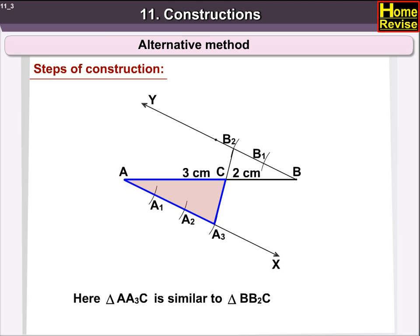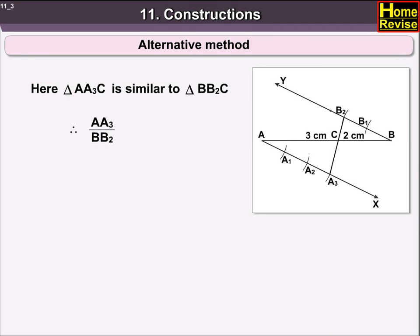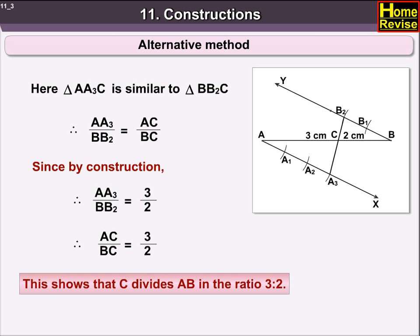Here, triangle AA3C is similar to triangle BB2C. Then, AA3 upon BB2 is equal to AC upon BC. Since by construction, AA3 upon BB2 is equal to 3 upon 2, therefore AC upon BC is equal to 3 upon 2. This shows that C divides AB in the ratio 3 is to 2.